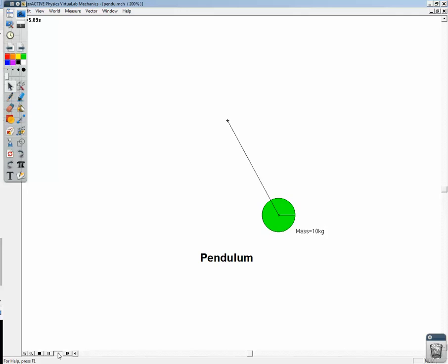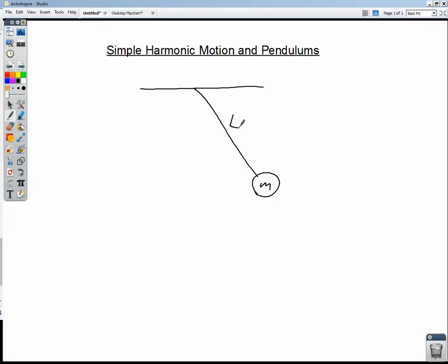Okay, so we can see that what matters for the pendulum is not the mass of the pendulum bob hanging on the end. It's the length of the string, and it's the acceleration due to gravity. So then we see that the period of our pendulum is directly proportional to L. If we increase the length of the string, then we get an increase in the period. And it is inversely proportional to G.